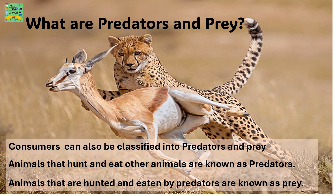What are predators and prey? Consumers can also be classified into predators and prey. Animals that hunt and eat other animals are known as predators. Animals that are hunted and eaten by predators are known as prey. For example, if there is a cheetah and a deer, the cheetah hunts down and eats the deer, so it is a predator, whereas the deer is being hunted and eaten, so it is known as the prey.